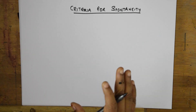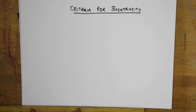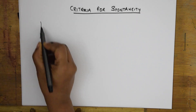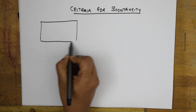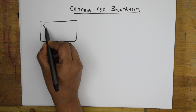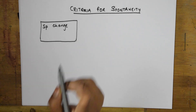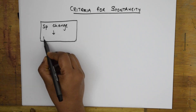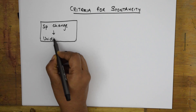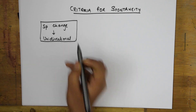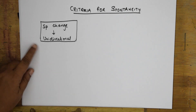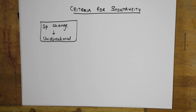First of all, I'll write this in the form of a box because these five important things you should remember. The first criteria: spontaneous change — I'll write it as SP — is always unidirectional. It will happen only in one direction, only one way. That is the first criteria.